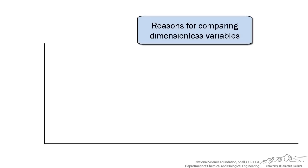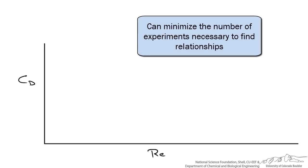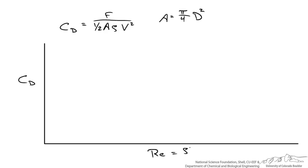As it turns out, we can combine all of that data based on viscosity, diameter of the sphere, and density of the fluid into a graph of what is known as the coefficient of drag as a function of what is known as the Reynolds number. Both of these are dimensionless parameters — they do not have dimensions like meters or kilograms. The coefficient of drag equals the force of drag divided by one half times the cross-sectional area of the sphere times the density times the velocity squared, where the area is π/4 times the diameter squared. The Reynolds number equals the density of the fluid times the velocity times the diameter of the sphere, divided by the viscosity of the fluid.